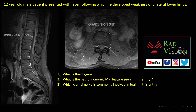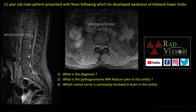Next — 12-year-old male presented with fever followed by weakness of bilateral lower limbs. Here you can see enhancement noted along the cauda equina and conus medullaris — typically enhancement of the anterior nerve roots in the cauda equina region. The diagnosis is Guillain-Barré syndrome. The pathognomonic MR features are nerve root thickening and contrast enhancement of the conus medullaris and the anterior nerve roots of the cauda equina. The facial nerve is commonly involved in this entity.